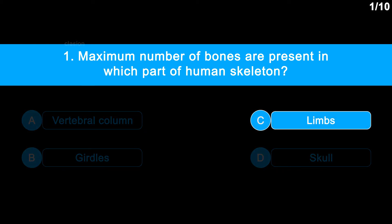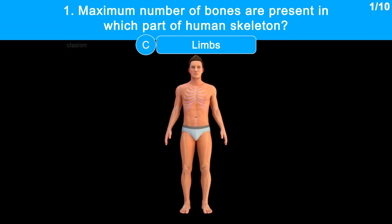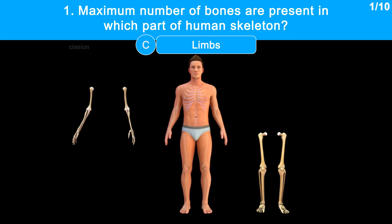Correct answer is Option C: limbs. Maximum number of bones — i.e., more than half of the bones in our body — are present in limbs. Each limb has 30 bones, so 30 into 4 equals 120 bones present in our limbs.